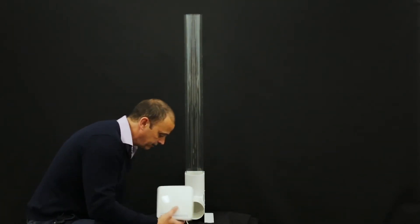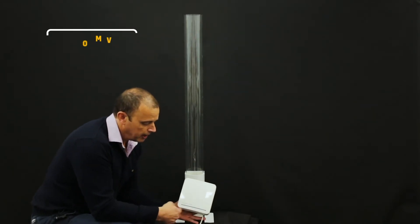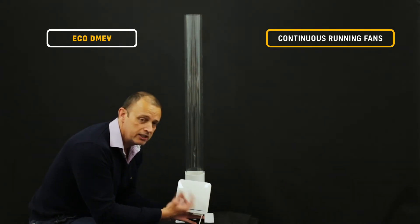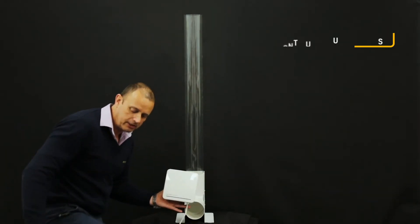And that's sort of it on the fans. I've got one more I'm just going to show you. Now this is a slightly different fan. This is what we call our Eco dMEV. This is a continuous-running fan, so it's designed to run all the time. Just bear with me a second while I turn that fan off.